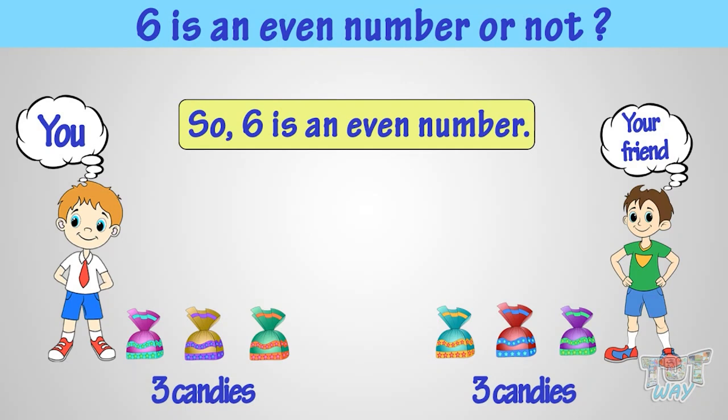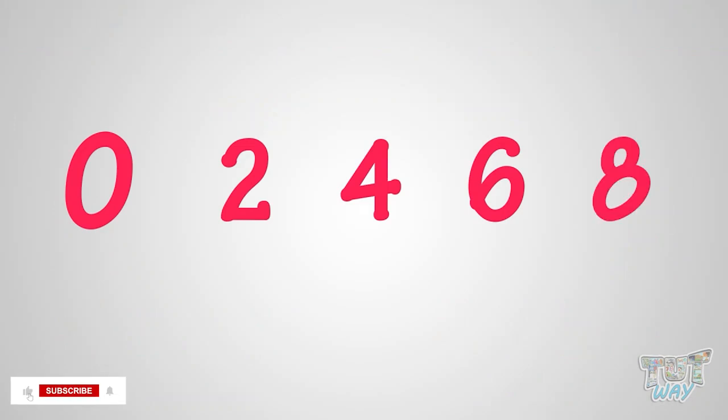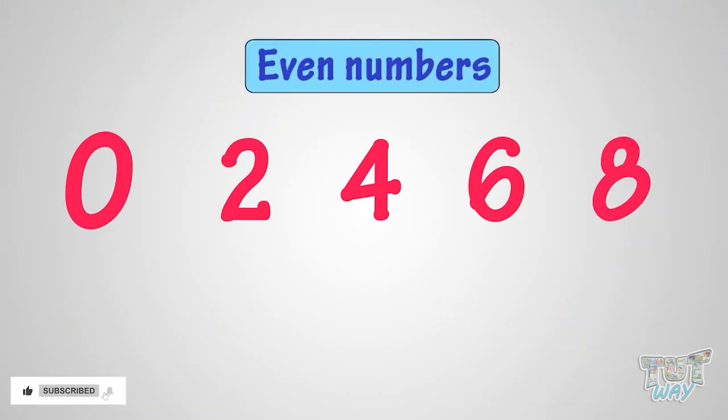Also, don't forget 0, 2, 4, 6, and 8 are even numbers. And all the numbers ending with them, like 28, 36, 40, and 50, are even numbers.